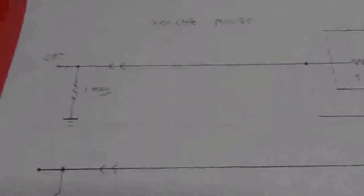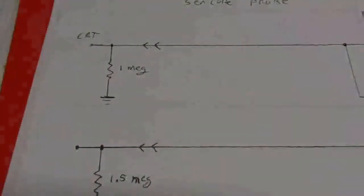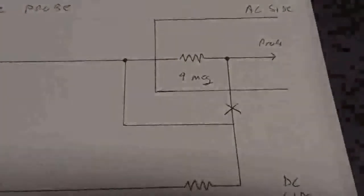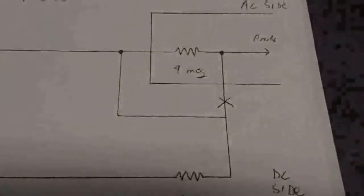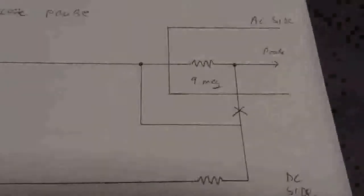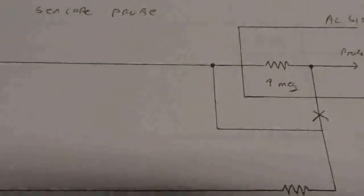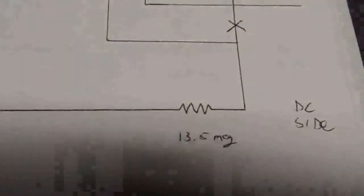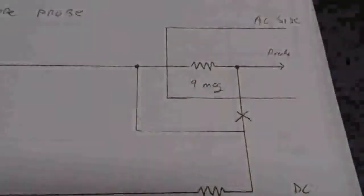This is the schematic of what I came up with when I adapted it. Instead of having the DC side connected directly to the probe, I connected it to the end of the 9 meg and changed this to a 4.7, which technically should have worked correct.